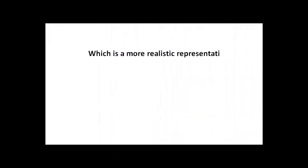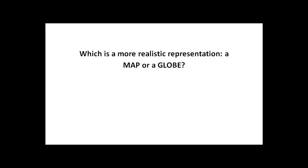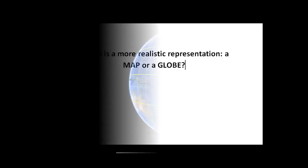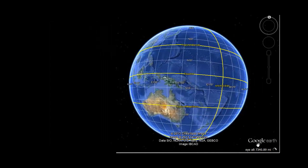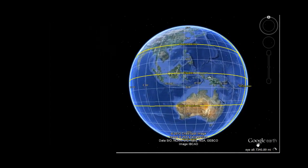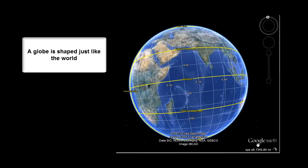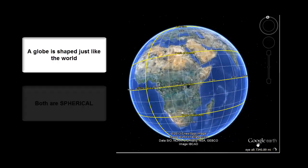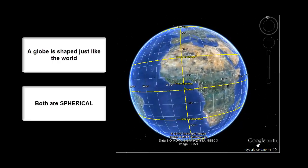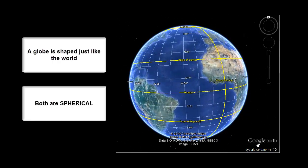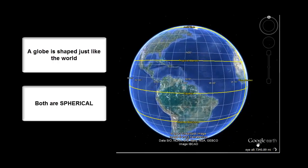Now that we know what maps and globes are, let's discuss which is a more realistic representation of the world, a map or a globe. A globe is more realistic because a globe is shaped just like the world. Both are spherical, so a globe is more accurate than a flat, two-dimensional map.